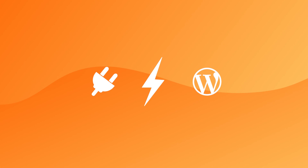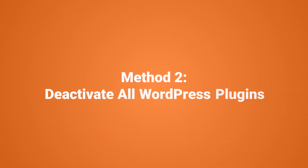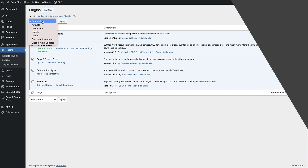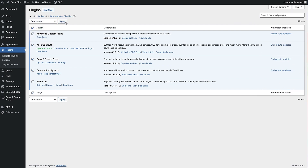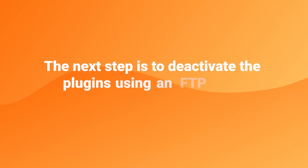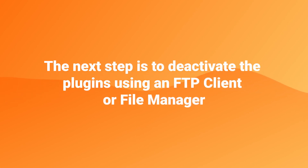The most common cause of the too many redirects issue is a plugin conflict on your WordPress site. This is usually a plugin trying to set up a redirect that conflicts with the default WordPress redirects. What you need to do is deactivate all WordPress plugins. Normally you can do this through the plugins area on the WordPress dashboard, but as you probably can't access the dashboard, our next step is to deactivate WordPress plugins using an FTP client or file manager app in your hosting control panel.